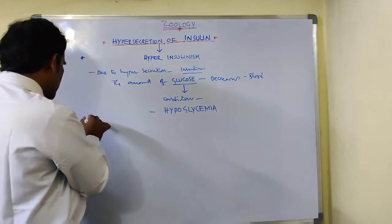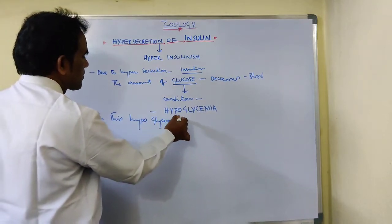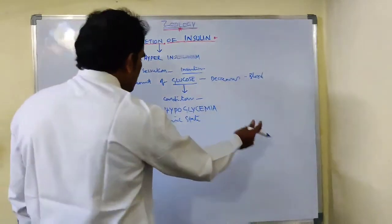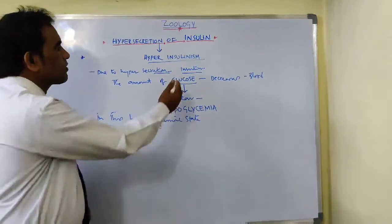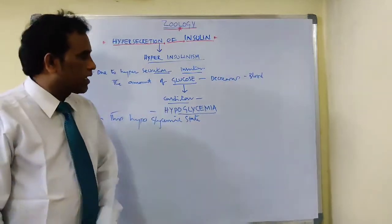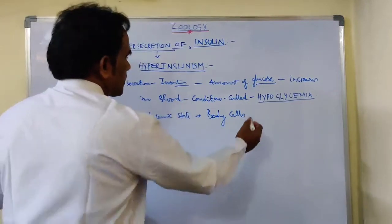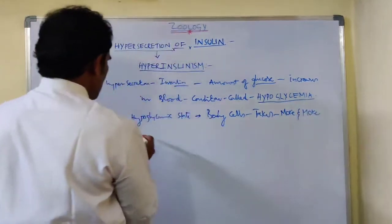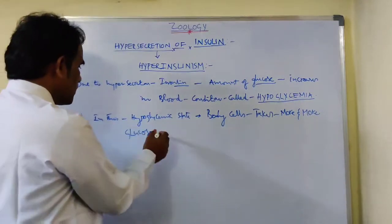In this hypoglycemic state, the body cells take more and more glucose from the blood.